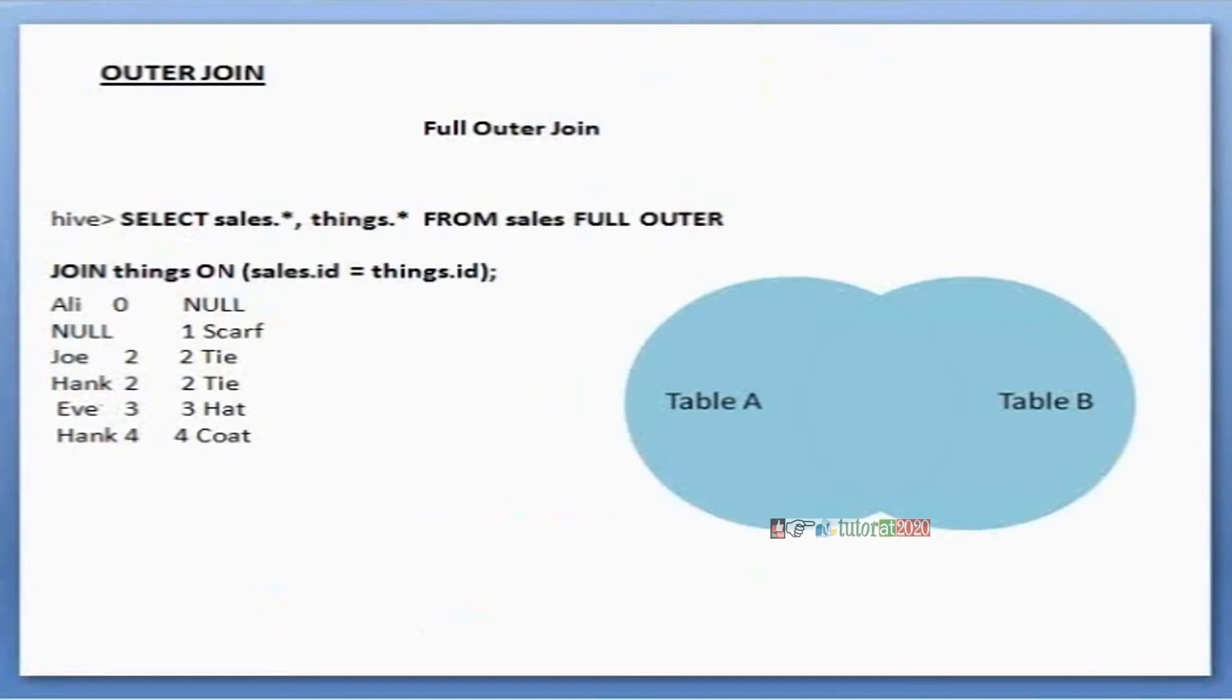If I want to apply left outer or full outer: full outer means both the tables' all values I want to display. For example, some values are not matching - left side nulls coming, some values not matching - right side nulls coming. That type we call full outer join.